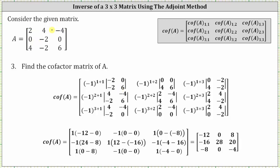Cofactor one comma two is equal to negative one raised to the power of one plus two, times the minor — the determinant after eliminating row one and column two. This is a two-by-two determinant where row one is zero, zero, and row two is four, six. Cofactor one comma three is equal to negative one raised to the power of one plus three, times the minor after eliminating row one, column three. That two-by-two determinant has row one as zero, negative two, and row two as four, negative two.